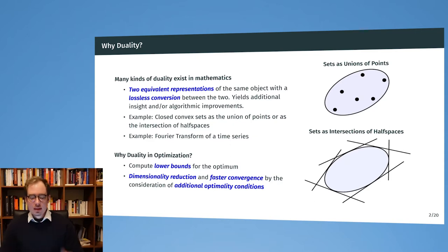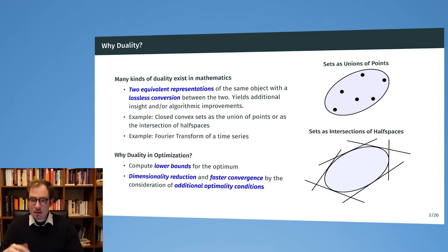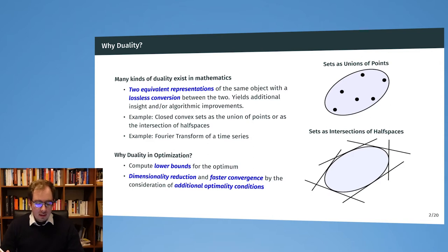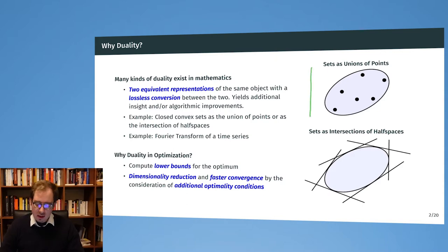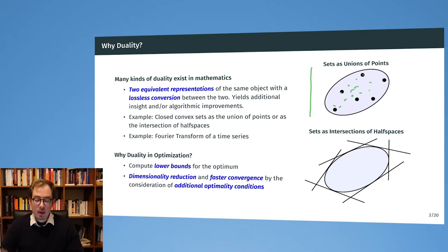First of all, duality — why are we interested in the subject? Duality is oftentimes used to describe an object that has two alternative representations, and I can transform between the two representations without losing any critical information. For example, here we have a set as the union of points. I have a set with many points, and I just describe the set as the union — there can be infinitely many points in the union.